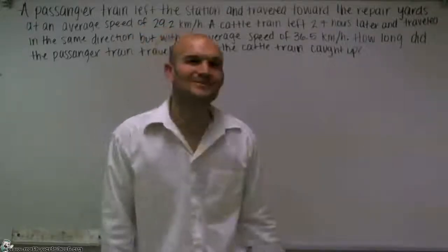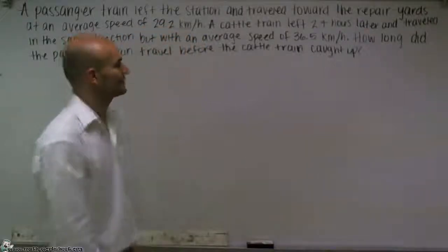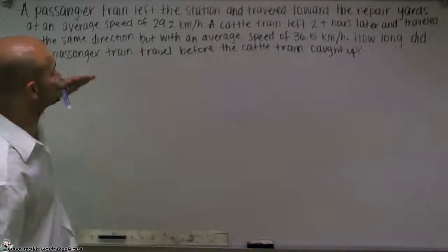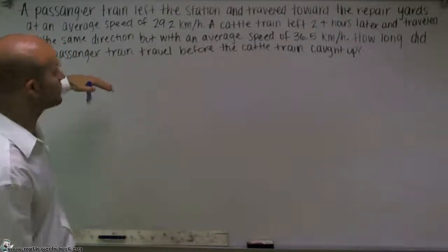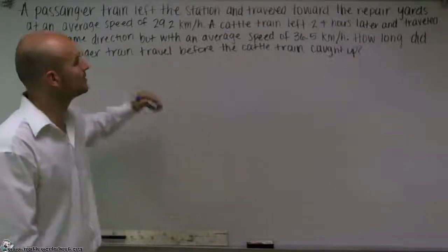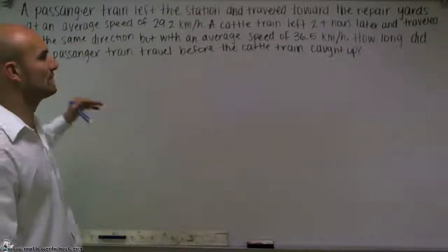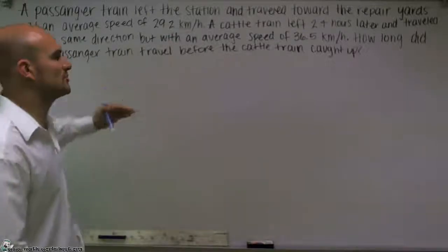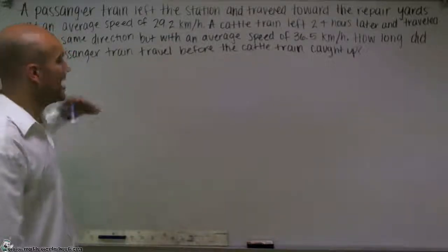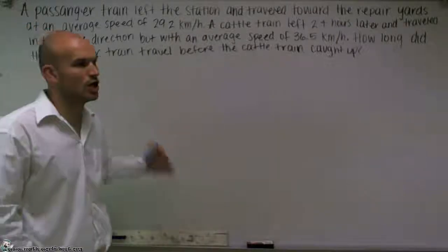Welcome. What I'd like to do is show you how to solve this distance rate problem. So the problem reads: a passenger train left the station and traveled toward the repair yard at an average speed of 29.2 kilometers per hour. A cattle train left 2.4 hours later and traveled in the same direction, but with an average speed of 36.5 kilometers per hour. How long did the passenger train travel before the cattle train caught up?